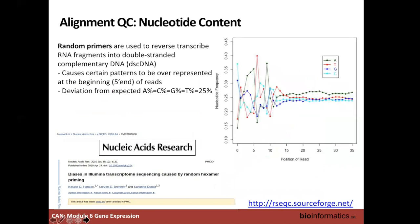At the beginning of reads, primers should bind randomly, so you expect roughly equal proportions of A, C, G, and T throughout the read. However, when you plot nucleotide frequency as a function of read position, you often see that the first 10 base pairs are not as flat as the expected 25% each. This can interfere with your mapping. You can try aligning with and without trimming the first 10 base pairs and compare the mapping quality, trimming if it improves things.